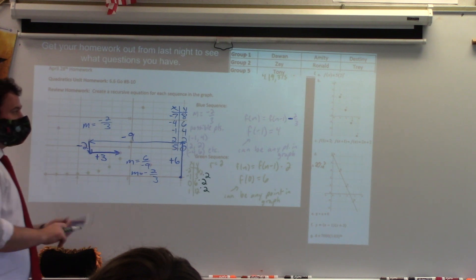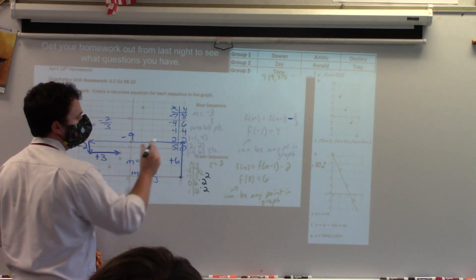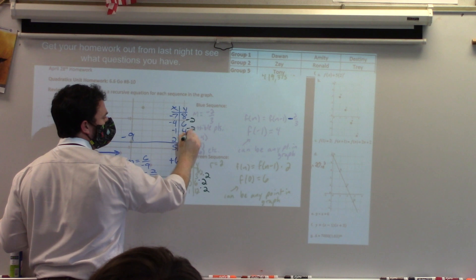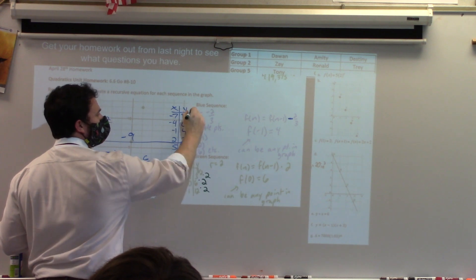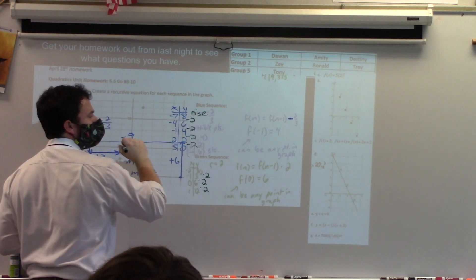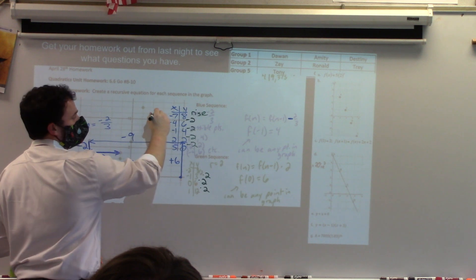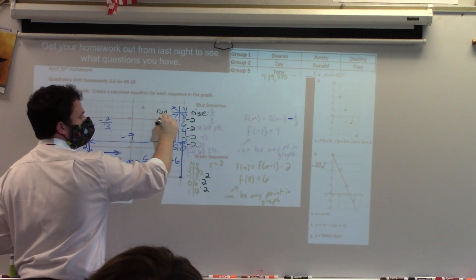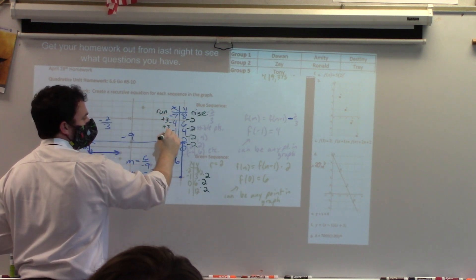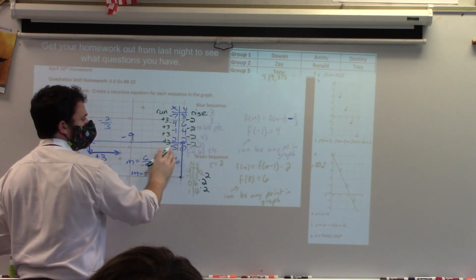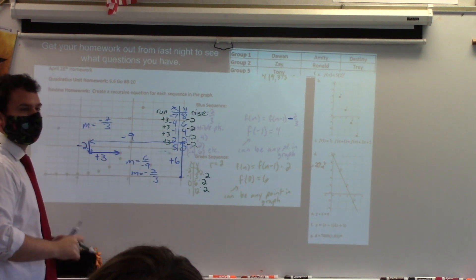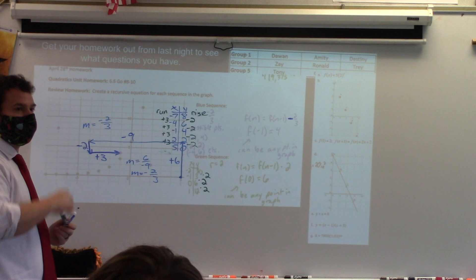Now, again, this is where you can make a table. Notice how it's going down two in the y's? But that is just my rise. If I'm talking about slope, I also need a run. Does that answer your question, Tony? Mm-hmm.